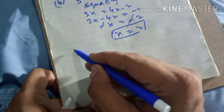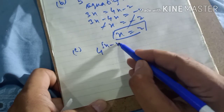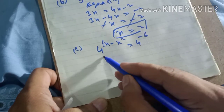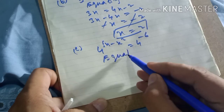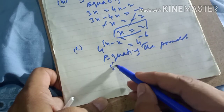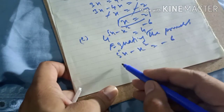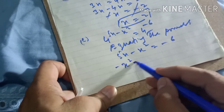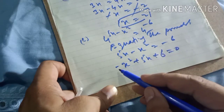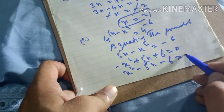Part c: 4^(5x − x²) = 4^(−x). Equating the powers since the base is the same: 5x − x² = −6. Rearranging: −x² + 5x − 6 = 0, or equivalently x² − 5x + 6 = 0.